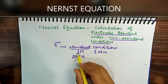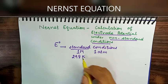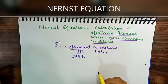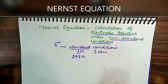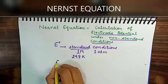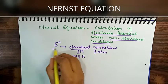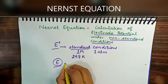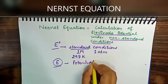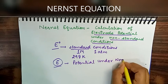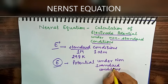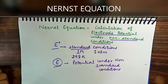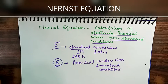Now the question is: if we change these conditions — for example, concentration is not 1 molar but 0.5 molar, or temperature is not 298 K, or pressure has changed — then the potential changes. That changed potential is denoted as E (not E°). E represents the potential under non-standard conditions.